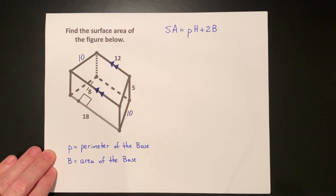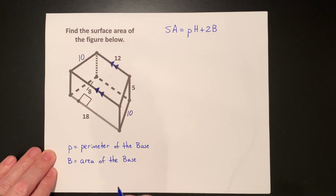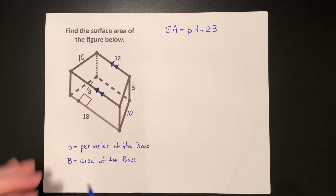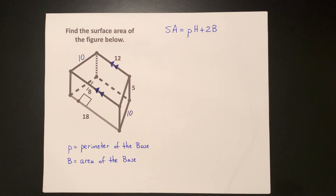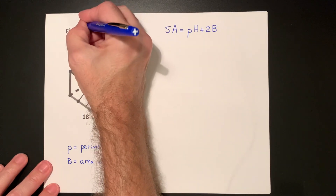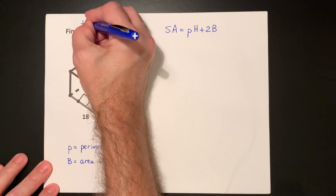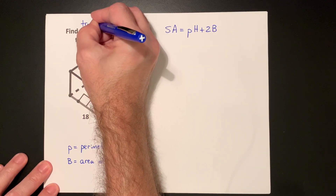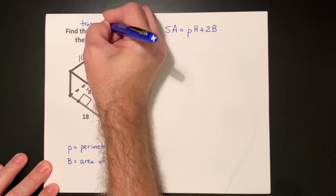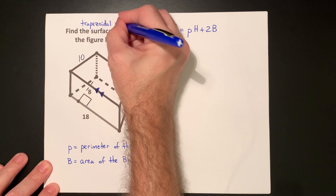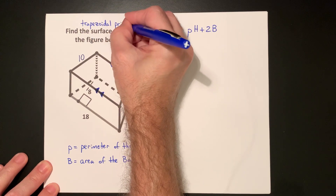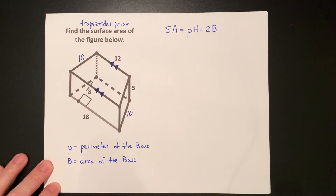The first thing that we need to do is figure out what is the perimeter of the base. The base is the shape that is repeated — in this case, the trapezoid. This is a trapezoidal prism because the bases are trapezoids.